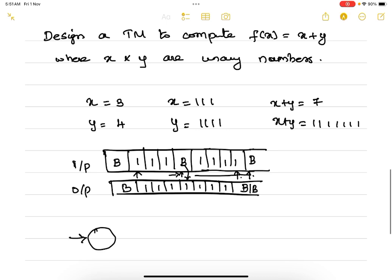Initially you are in one state, say q0. When a 1 comes, you replace that with 1 and move towards right because you are traversing all the x. When a blank comes, you replace that with blank and move towards right, and again you need to traverse all y's. So when a 1 comes, replace that with 1 and move towards right. When a blank comes, replace that with blank and move towards left.